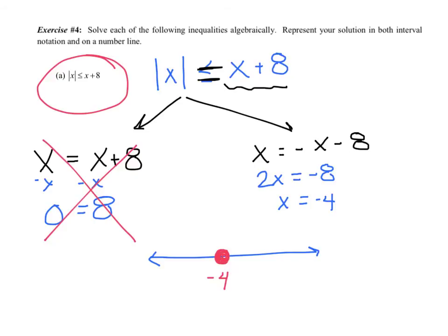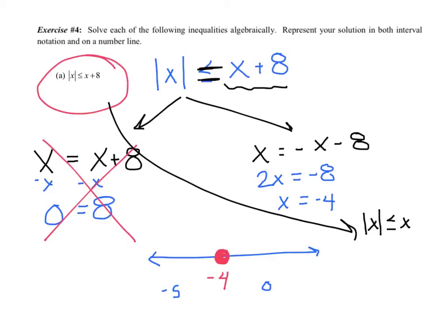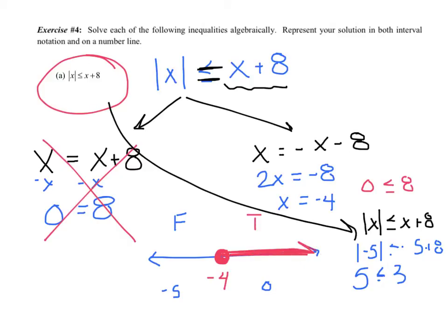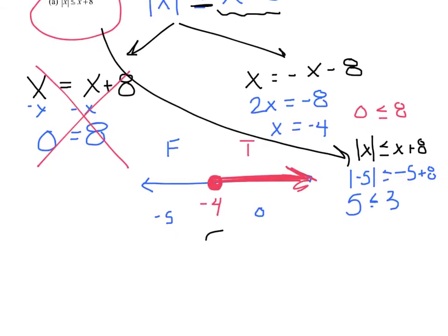Looking back at the original — less than or equal to — so I want a closed circle at negative four. Testing zero on the right side: the absolute value of zero is less than or equal to zero plus eight — zero is less than or equal to eight, true. Testing negative five on the left: the absolute value of negative five is positive five; is five less than or equal to negative five plus eight, which is three? That's false. So I shade to the right. The answer is x is greater than or equal to negative four, or bracket negative four to infinity.